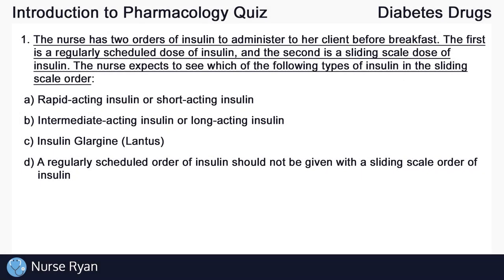Starting off with question number one. The nurse has two orders of insulin to administer to her client before breakfast. The first is a regularly scheduled dose of insulin and the second is a sliding scale dose of insulin. The nurse expects to see which of the following types of insulin in the sliding scale order.